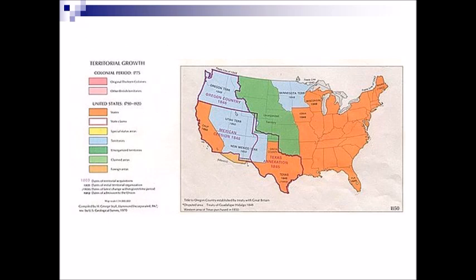If you want to know what we got from the Mexican Cession, that block includes what would become California and all those territories. Texas gets its new shape at this time period — we sell off other land to pay war debts. But taking the Louisiana Purchase and the Mexican Cession together, you've tripled the size of the United States very quickly.